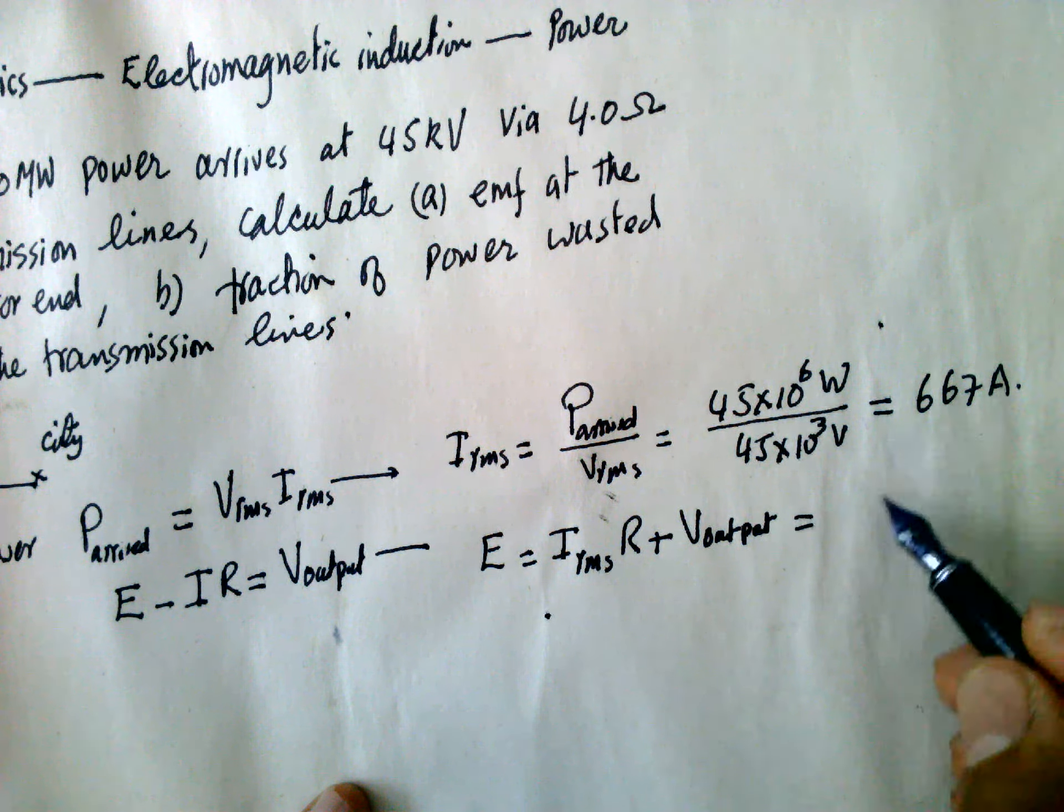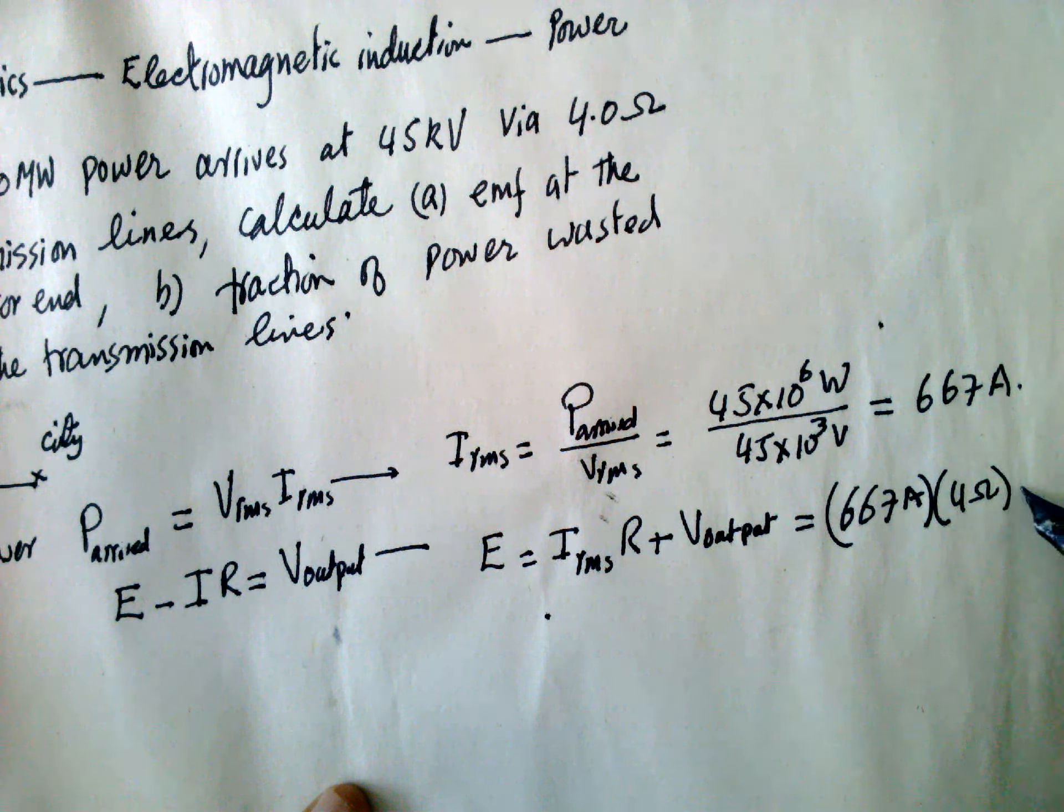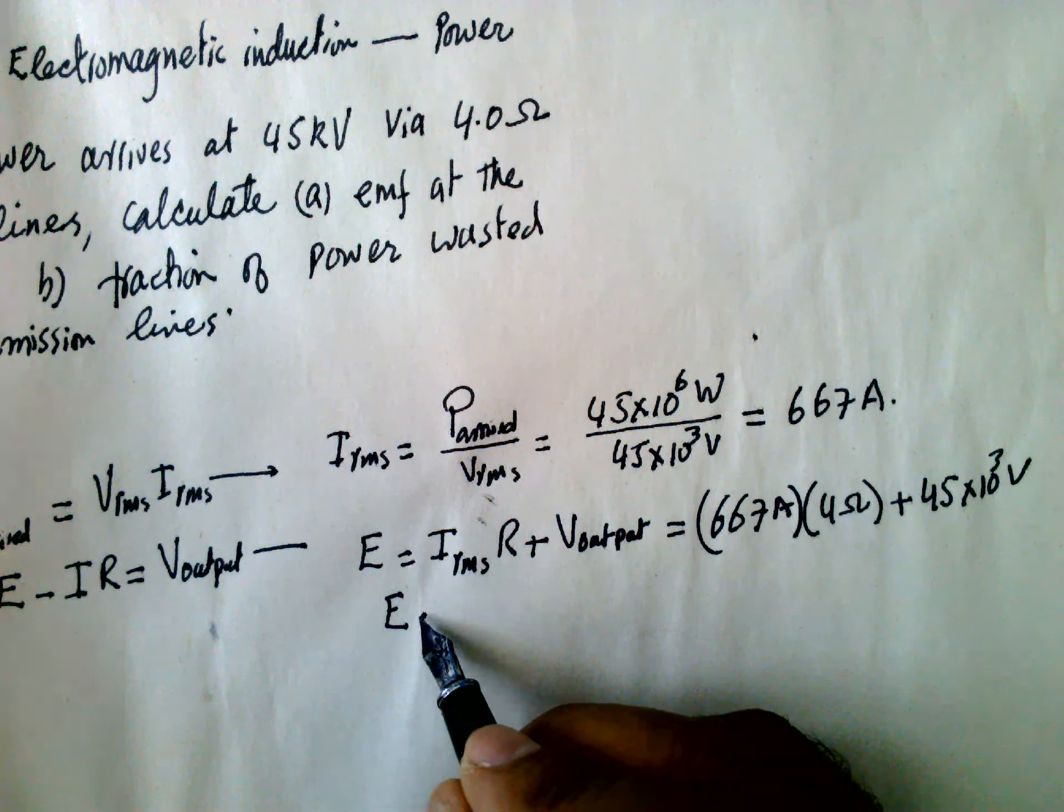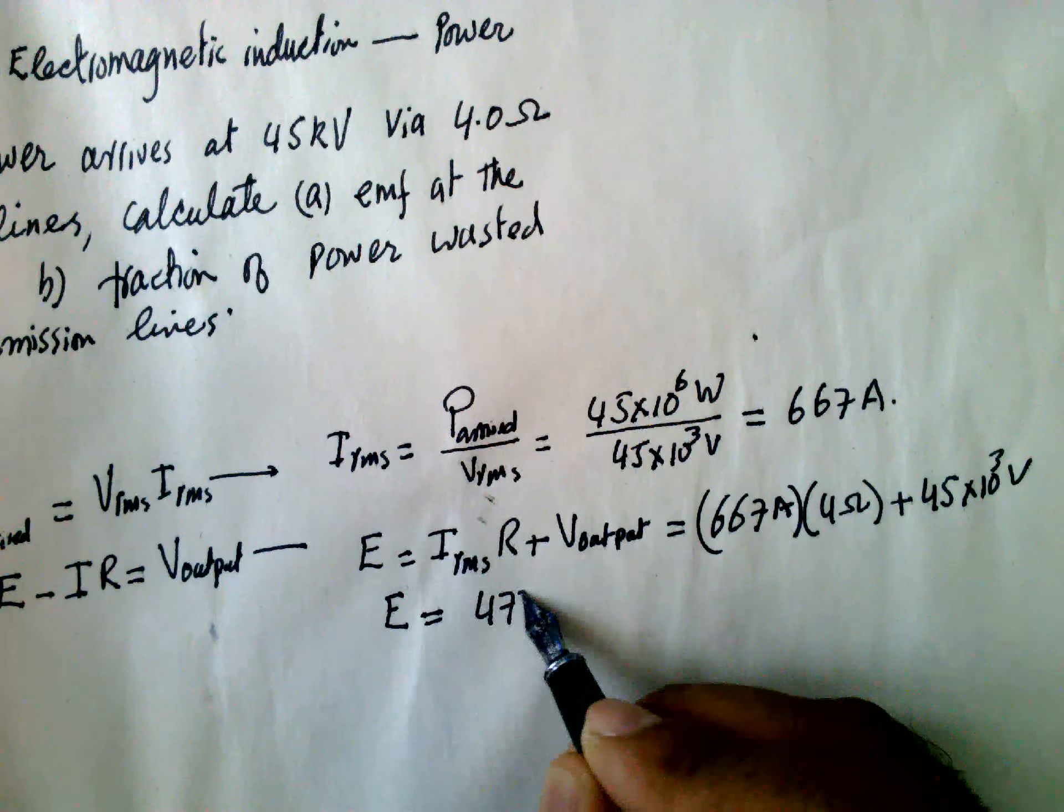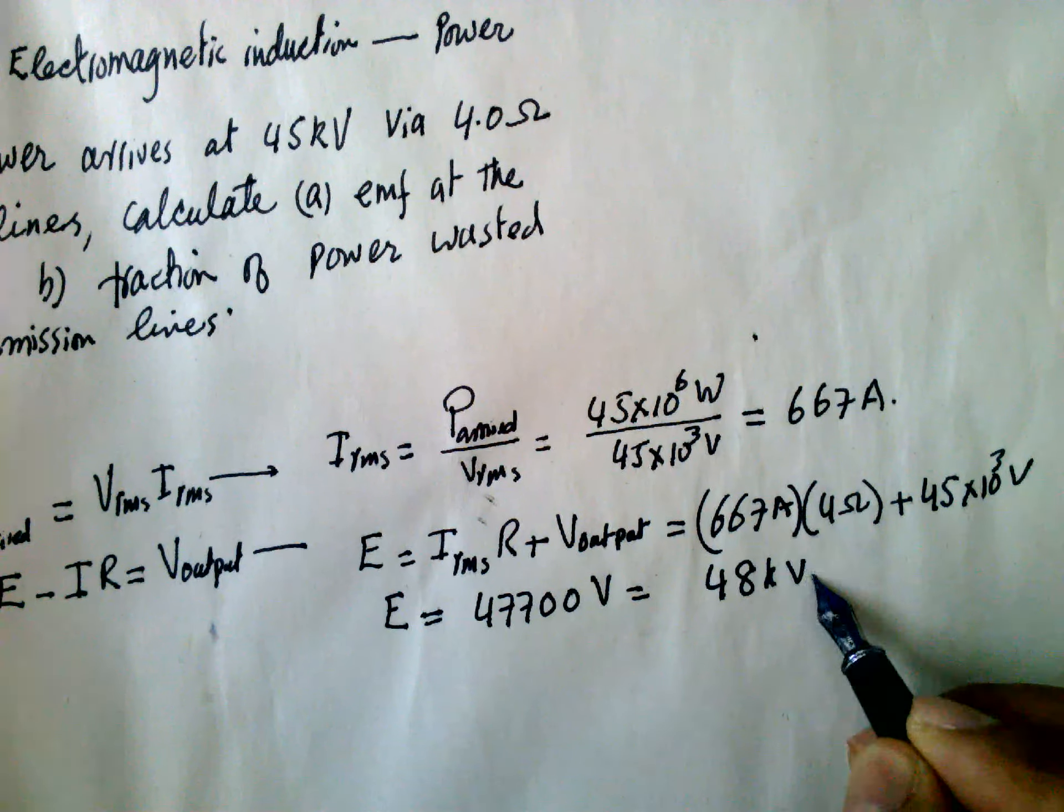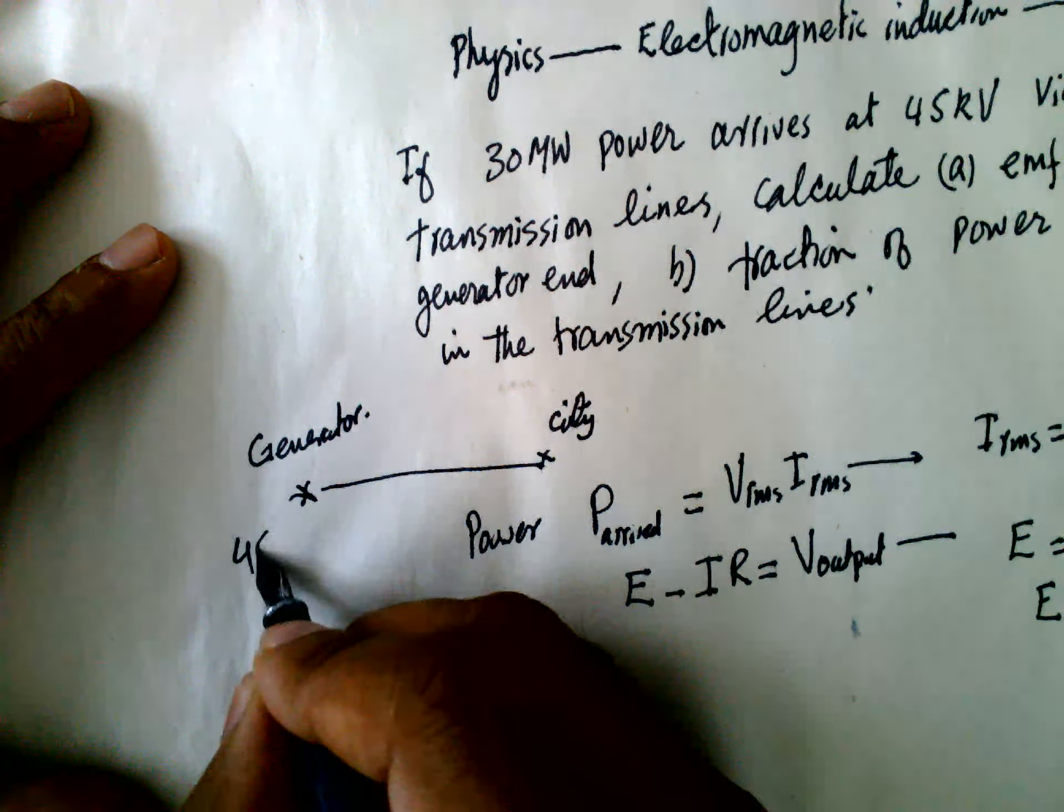And it is equal to 667 amps multiplied by 4 ohms plus 45 kilovolts. So EMF which is at the generator is equal to 47,700 volts which is equal to 48 kilovolts.